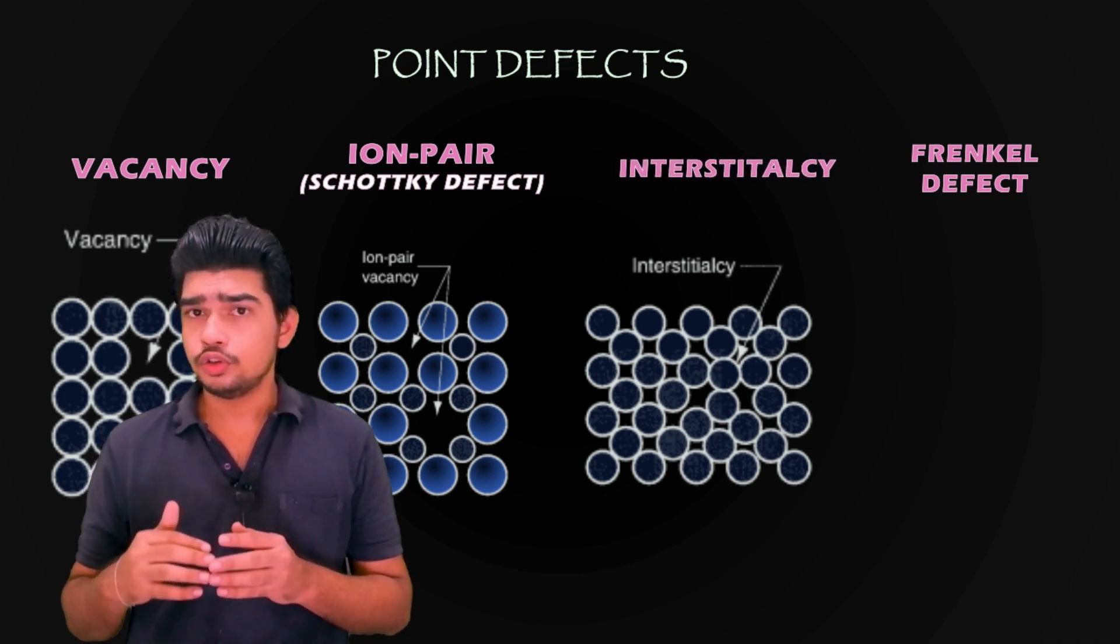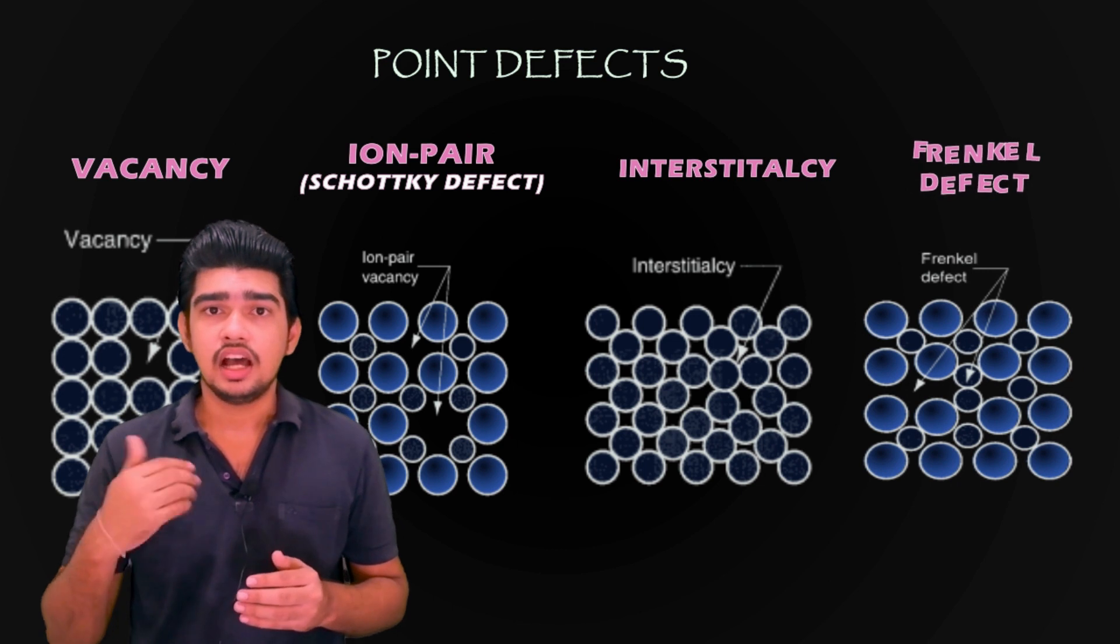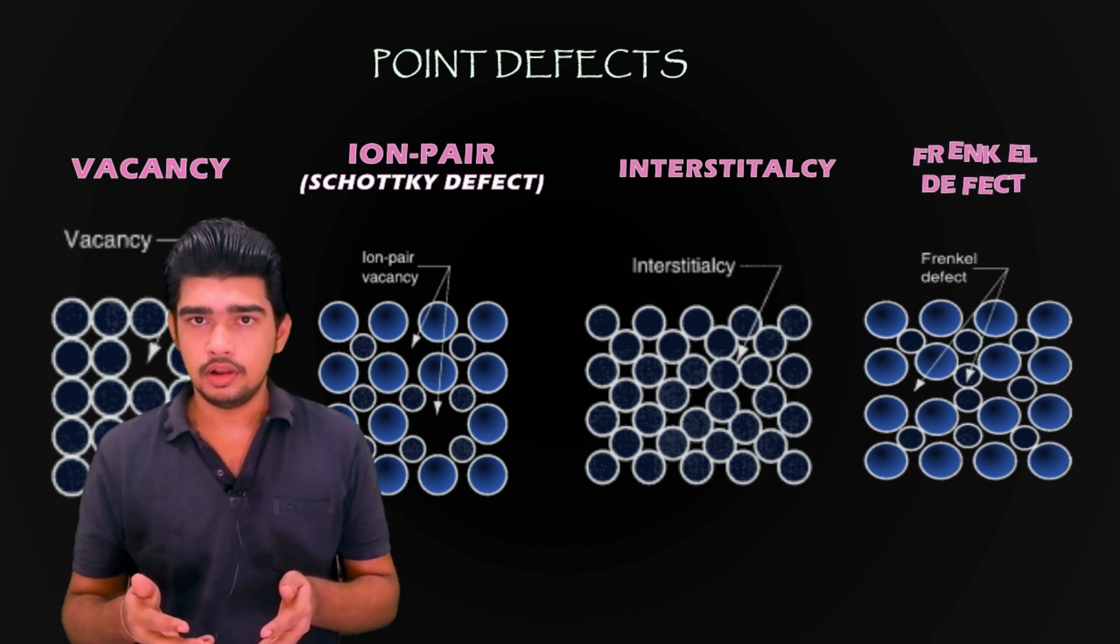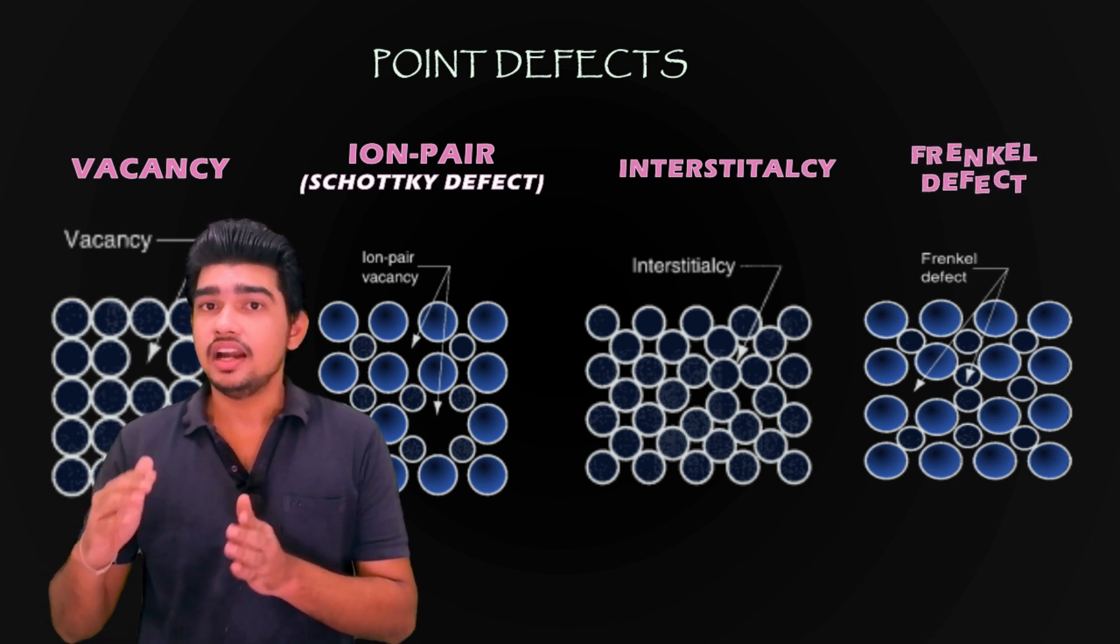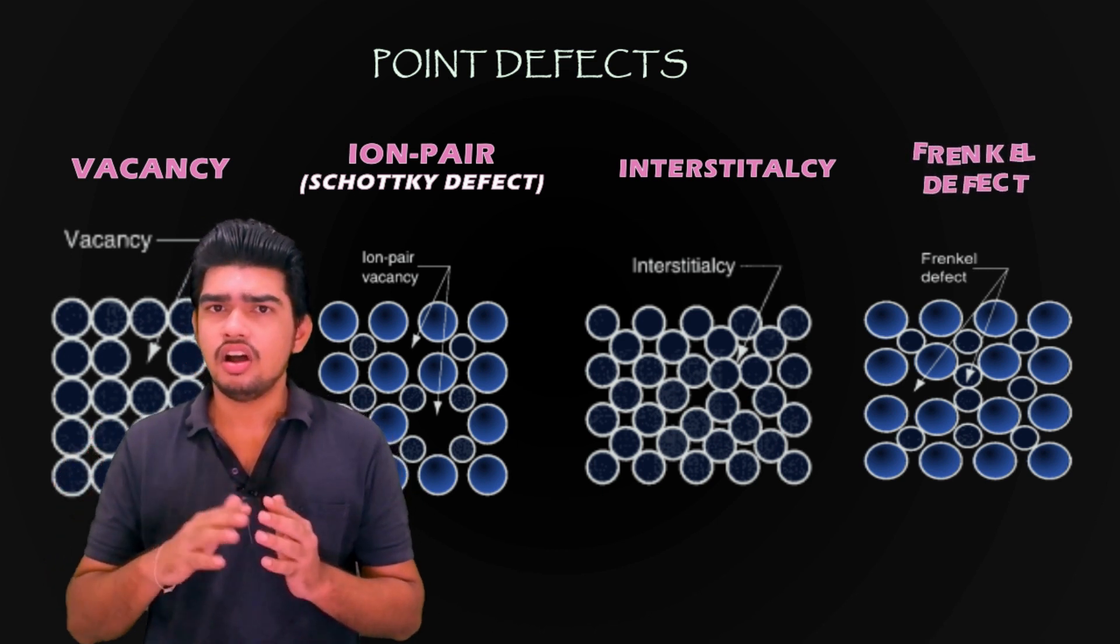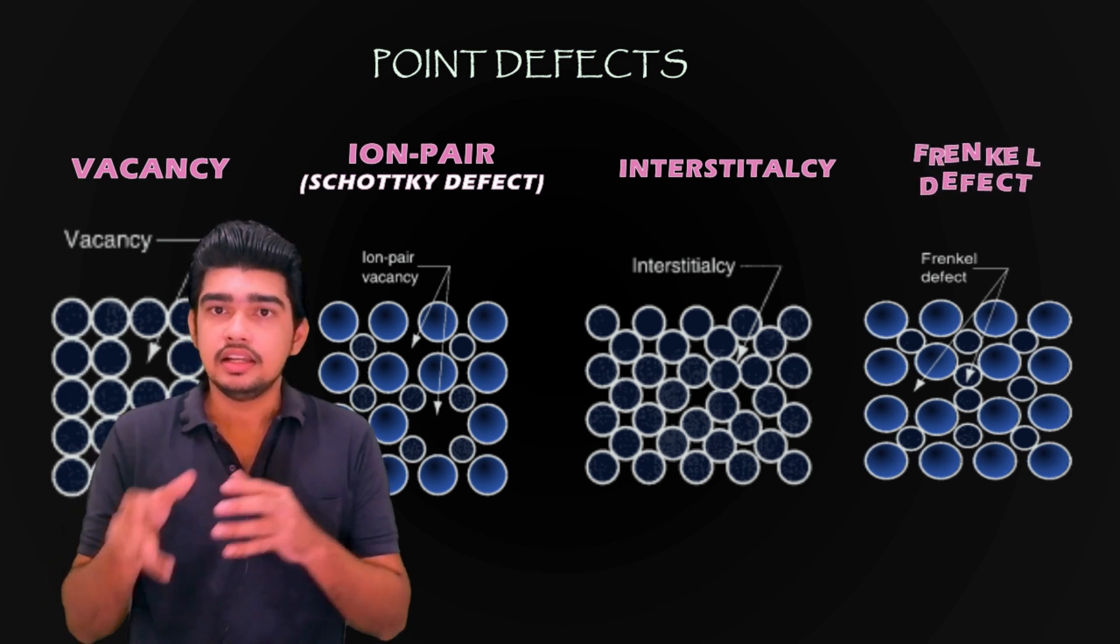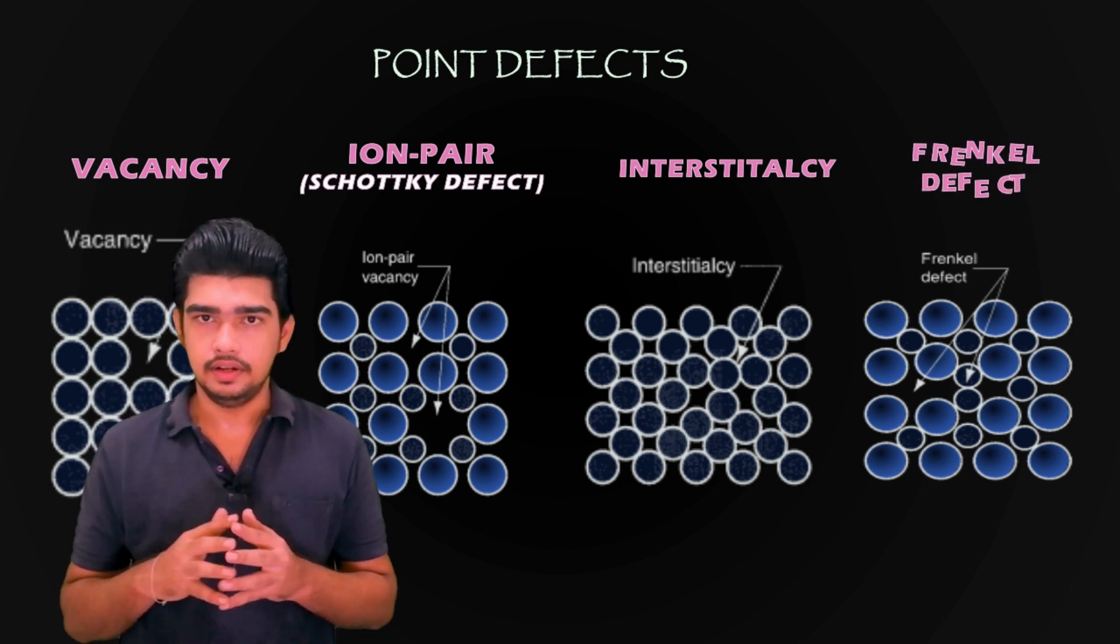And the fourth one is displaced ion, known as Frenkel defect, which occurs when an ion becomes removed from a regular position in the lattice structure and inserted into an interstitial position not normally occupied by such an ion. That is a position other than its normal position.